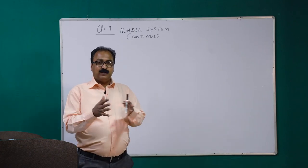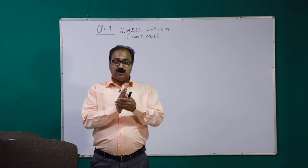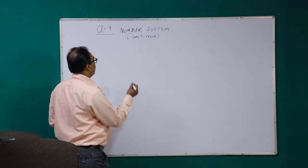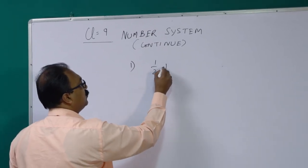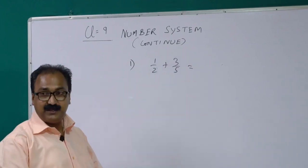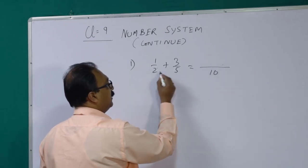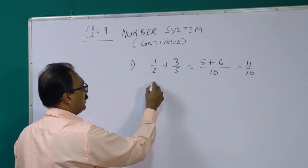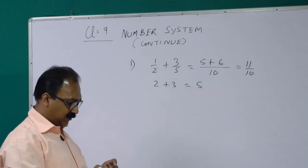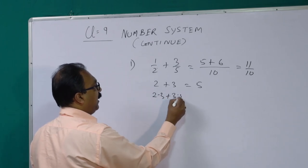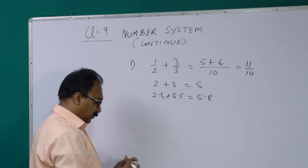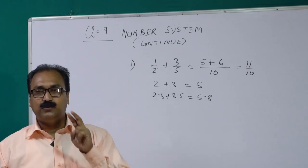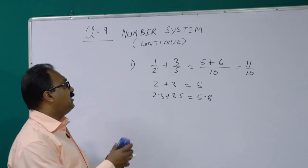First of all, the four fundamental operations — sum, subtraction, multiplication, and division of two rational numbers. Is the result always rational or something else? We will check it here. Sum of two rational numbers: suppose 1/2 + 3/5. Taking LCM of 10, we get 5/10 + 6/10 = 11/10, which is rational. Also, 2 + 3 = 5, which is rational. And 2.3 + 3.5 = 5.8, also a decimal rational number. So the sum of two rational numbers is always a rational number.